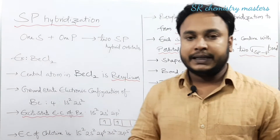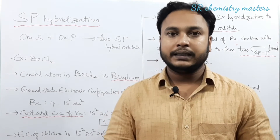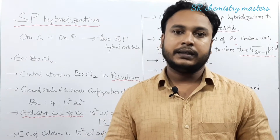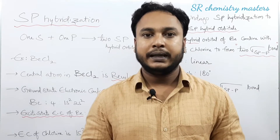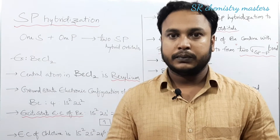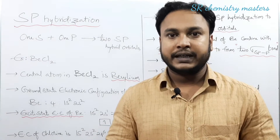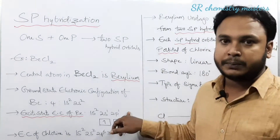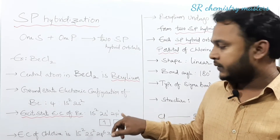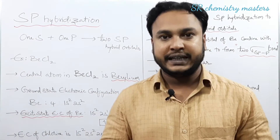When the electron is shifted from the s orbital to the p orbital, we have two unpaired electrons. Whenever energy is supplied to an atom, the electrons get excited to a higher energy level, provided the orbit has an empty orbital. Here, since beryllium has an empty p orbital, the electron from the s orbital shifts to the p orbital, giving two unpaired electrons after excitation.